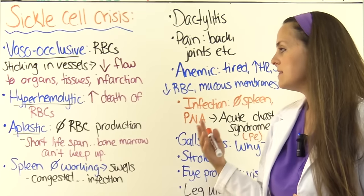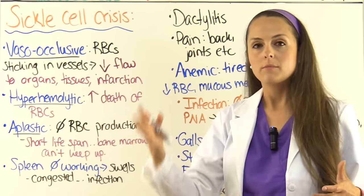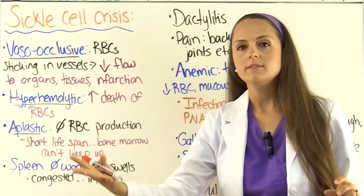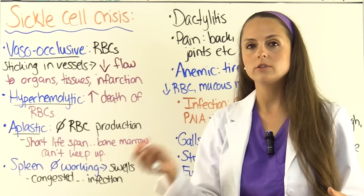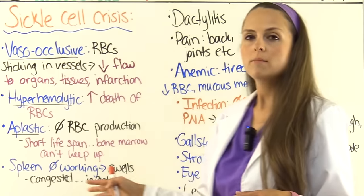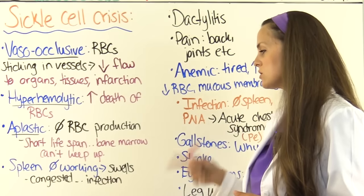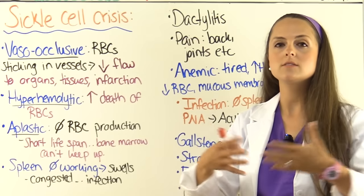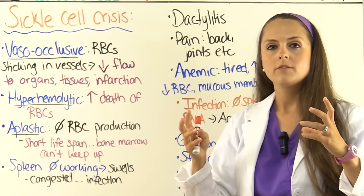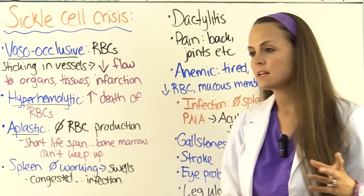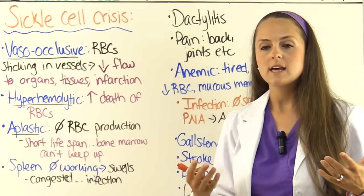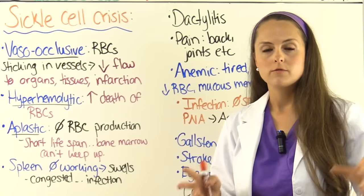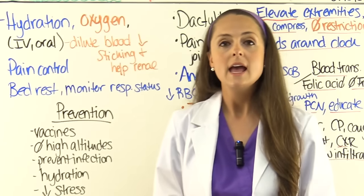Aplastic crisis occurs when red blood cell production comes to a halt — the bone marrow can't keep up with producing cells every 20 days. Splenic sequestration happens when the spleen isn't working because sickled cells drop blood flow to it; it starts to swell with fluid and becomes congested. Since the spleen helps filter blood from foreign invaders and recycle red blood cells, patients face a huge risk for infection.